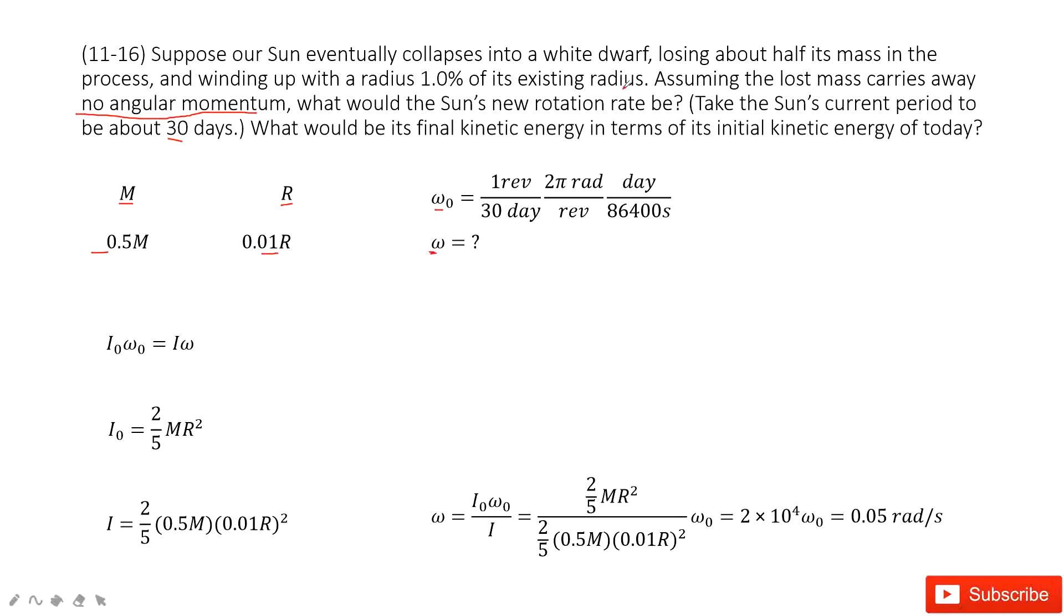As the Sun becomes a white dwarf, the moment of inertia is still this function, but the mass becomes half and radius becomes 1%. If we input I₀ and I in this function, we can get the function for omega.